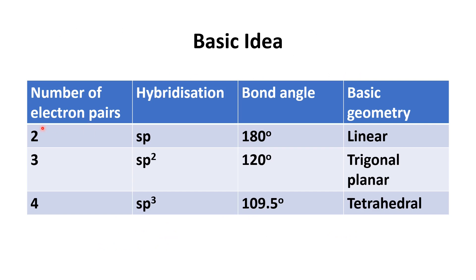From VSEPR theory, when the number of electron pairs is 2, the bond angle is 180 degrees, the geometry is linear, and the hybridization is sp. When the number is 3, the hybridization is sp2, the bond angle is 120 degrees, and the geometry is trigonal planar. When the number is 4, the hybridization is sp3, the bond angle is 109.5 degrees, and the geometry is tetrahedral. Notice that the number of electron pairs equals the number of orbitals involved in hybridization.